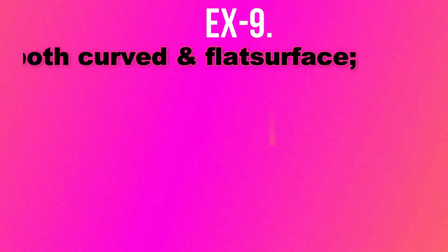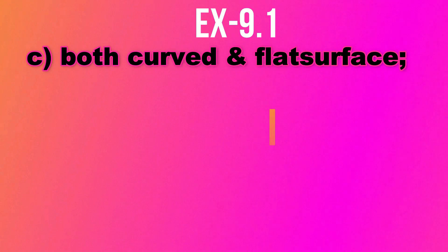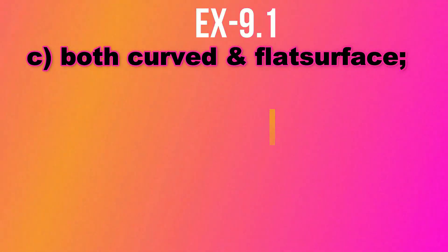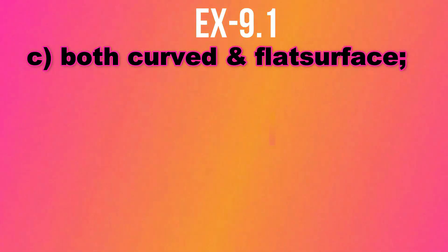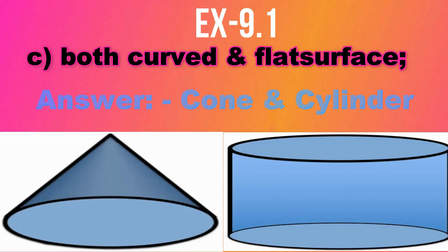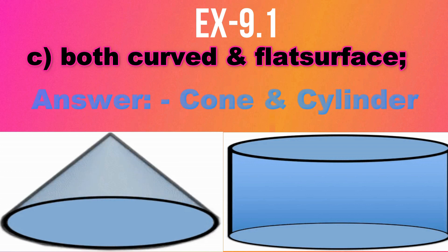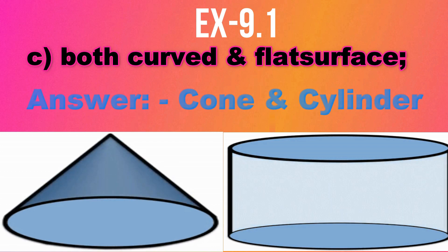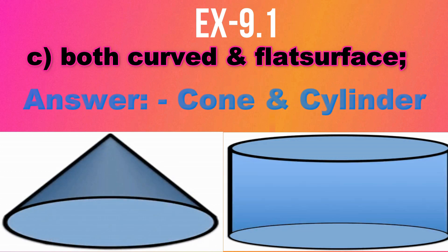Now, which solids have both curved and flat surfaces? The answer is cone and cylinder. Here you can see in the animation that they have both curved surfaces as well as flat surfaces.